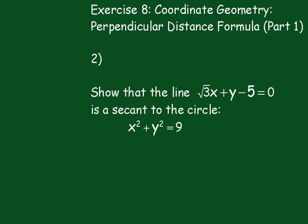Question 2: Show that the line root 3x plus y minus 5 equals 0 is a secant to the circle x squared plus y squared equals 9. Now what we need to do is pause the video and have a go at this.